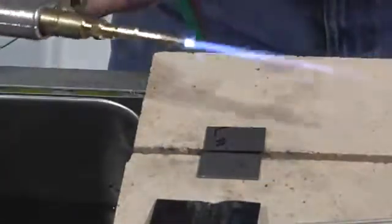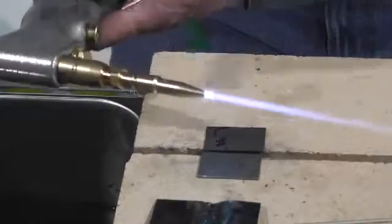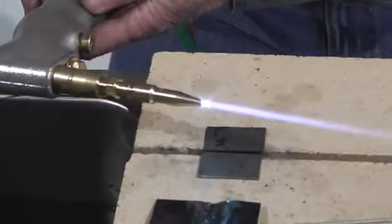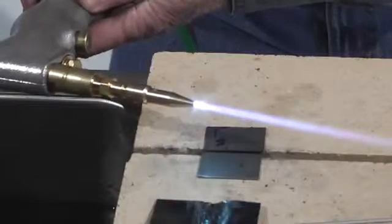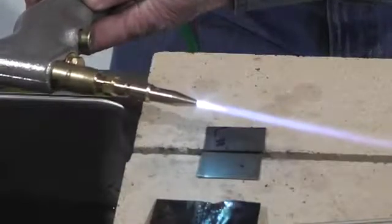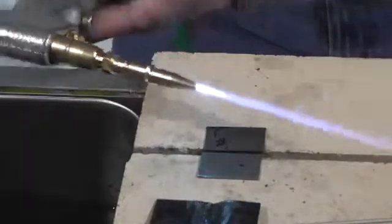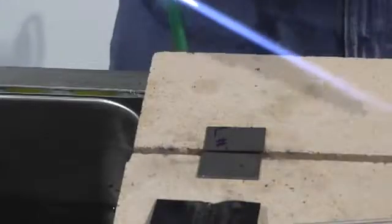Now when you weld steel, wherever metal but stainless use a neutral flame. Stainless a carburizing flame. All that means is that you're using a little bit more settling. So you run that flame out about two to three times longer than that little inner cone.